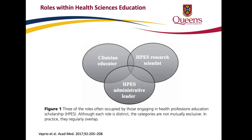Health professions education research scientists is another role — an individual who holds a graduate-level degree, either a PhD or occasionally a master's, in an academic discipline such as education, psychology, anatomy, or engineering, and should be formally engaged in health professions-related education scholarship. And lastly, the administrative leader primarily focuses on educational leadership activities, such as being an academic lead or a substantial component of a health professions education training program — our deans, assistant deans, and department chairs. The key component is that education scholarship must be involved across all roles.